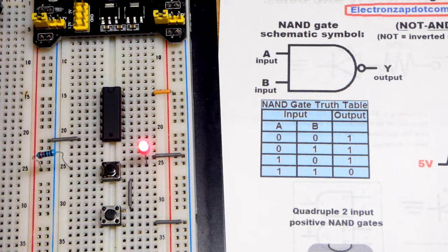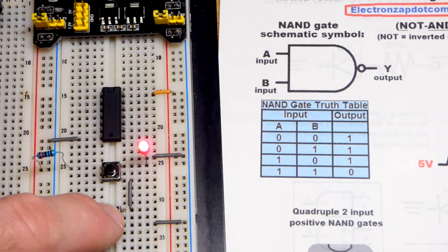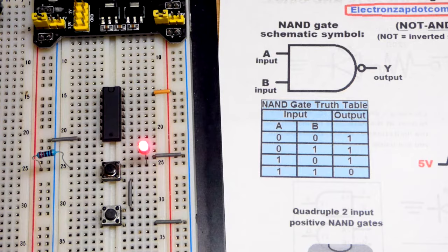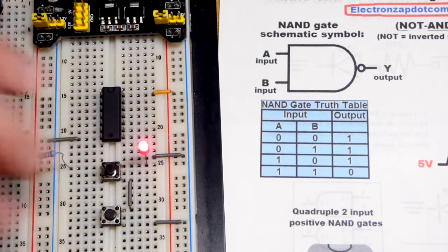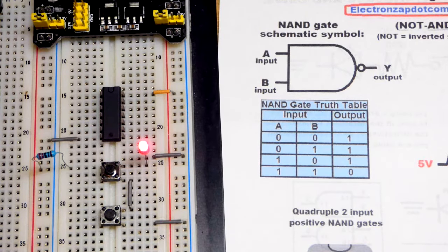We can hit one switch. Right now we're not hitting either. Or we could hit the other switch. So that was the first three conditions. Now we will press that switch and that switch. And you can see that the output goes out.